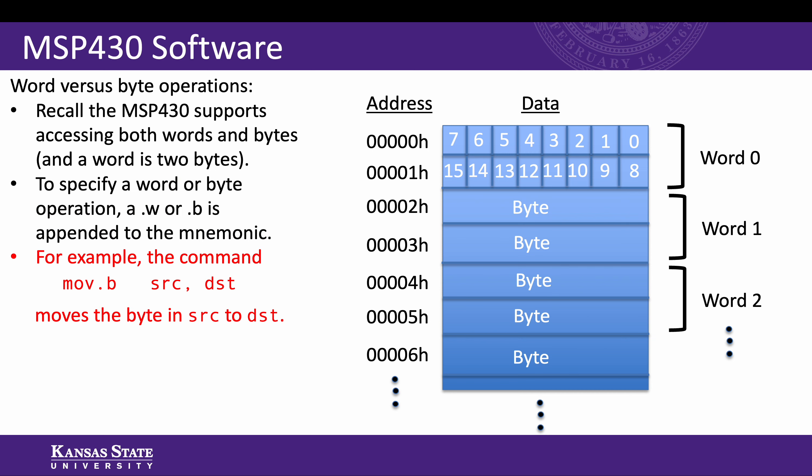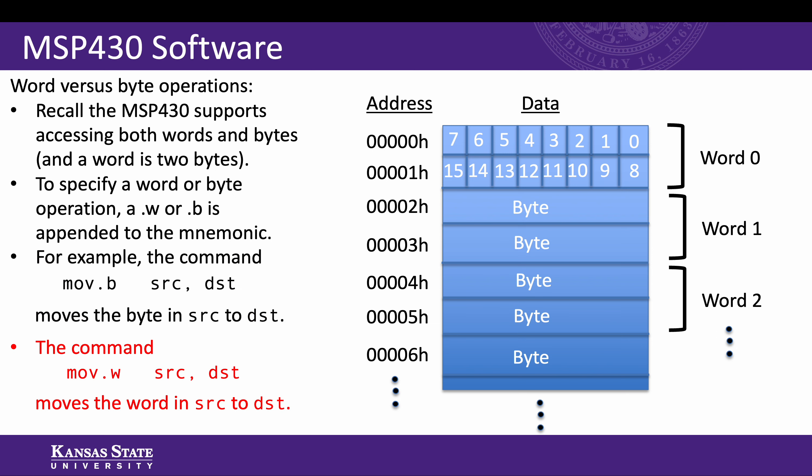For example, we previously saw a move command with the operand source and destination. If we append .b to MOV, we will move only a byte from the source to the destination. If we append .w to MOV, we will move both bytes — the entire word — from the source to the destination. Since the MSP430 is a 16-bit machine, 16 bits, or two bytes, or one word, is the default. So leaving off .b or .w will default to the word — two bytes.